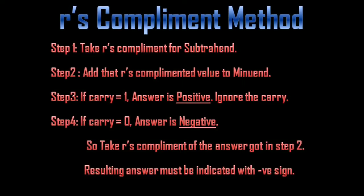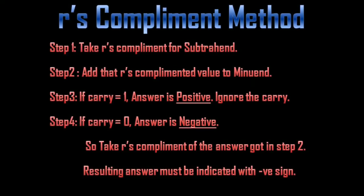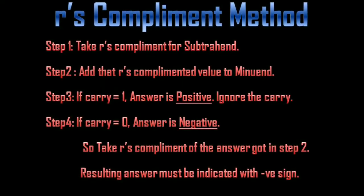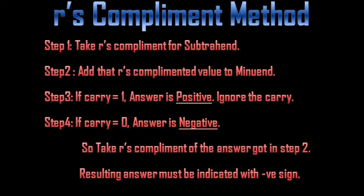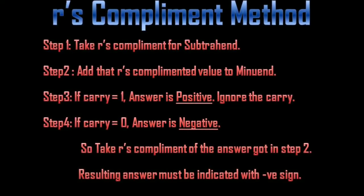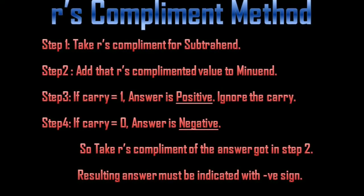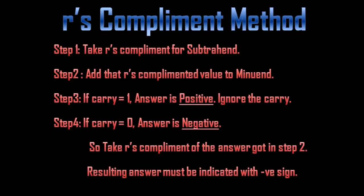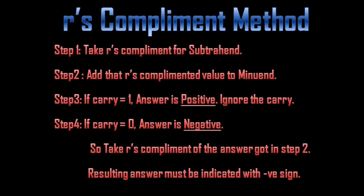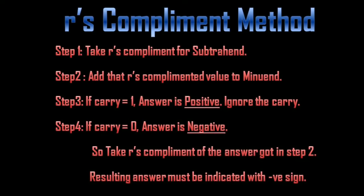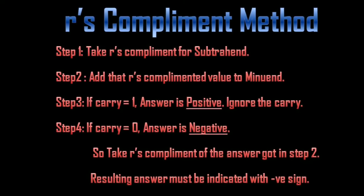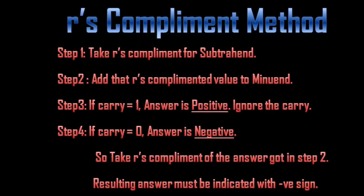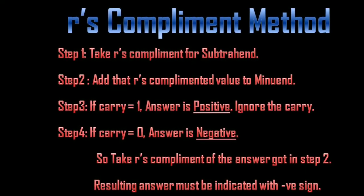In R's complement method, you need to take R's complement for the subtrahend and add that to the minuend. If carry is equal to 1, that shows the answer is positive, so ignore the carry. If carry is equal to 0, that shows the answer is negative, so you need to take R's complement for the answer obtained in step 2 and then indicate a negative sign.